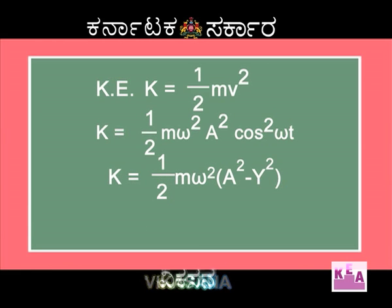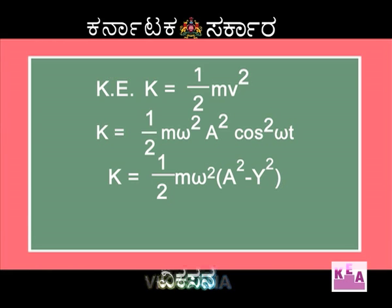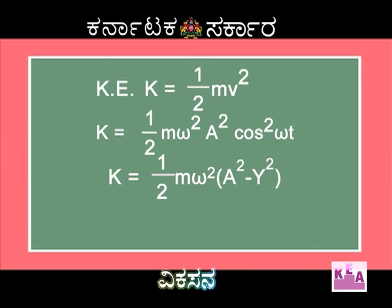When it comes to kinetic energy, the expression is K = half m v squared, and we know that v = omega into root of (A squared minus y squared). Therefore, K = half m omega squared (A squared minus y squared). You can also express kinetic energy in terms of a trigonometric function: K = half m omega squared A squared cos squared(omega t).